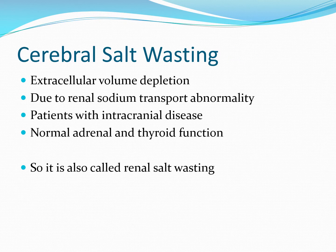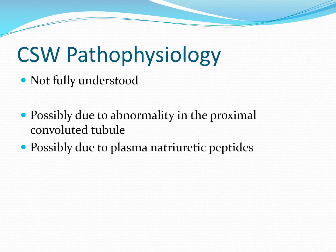In cerebral salt wasting we also see profound extracellular volume loss. This is thought to be due to an abnormality in renal sodium transport and it is a diagnosis of exclusion. We should look to prove that patients have normal adrenal and thyroid function before giving them this label. It typically occurs in patients with intracranial disease — most commonly after subarachnoid hemorrhage. Also known as renal salt wasting, the underlying pathophysiology is not fully understood; some authorities don't believe it is a separate entity despite being originally described in 1950. It may be due to an abnormality in the proximal convoluted tubule or high levels of plasma natriuretic peptides.